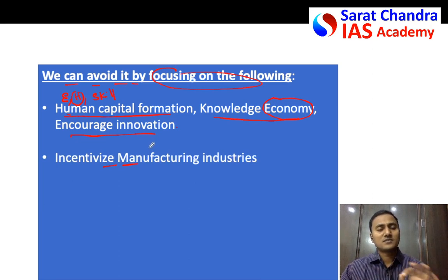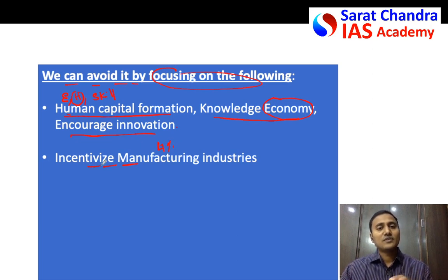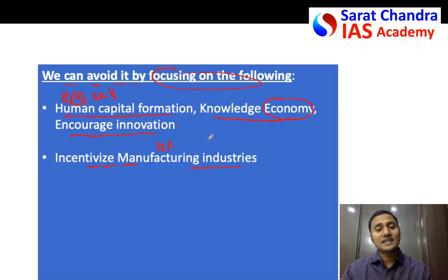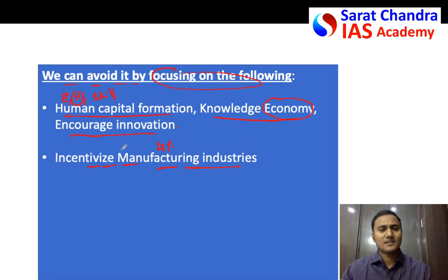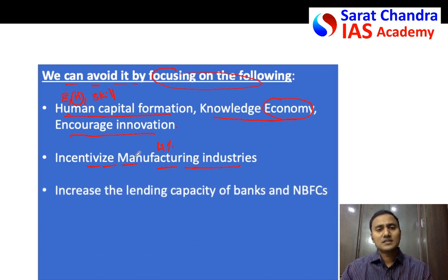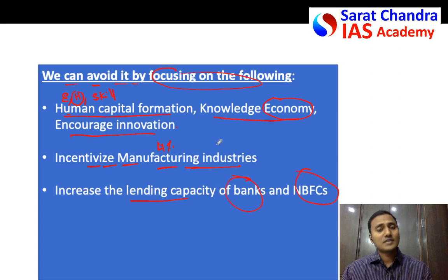As mentioned earlier, manufacturing sector contributes only 17% — so we have to incentivize industries and the manufacturing sector, because manufacturing provides large-scale employment. Only when employment increases does per capita income increase. You can mention the Board Vision 2025 or NITI Aayog reports on increasing manufacturing. For the NPA problem, we have to increase lending capacity not only of banks but also of non-banking finance companies. The RBI and finance ministry are following several methods to solve NPAs — mention one or two of them.